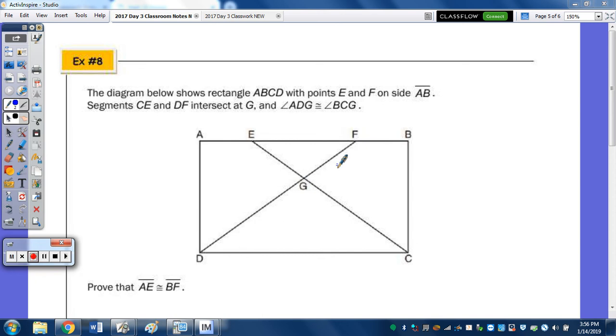Okay, so in class we left off with the two column proofs. So question number eight, it says, the diagram below shows rectangle ABCD with points E and F on side AB, segments CE and DF intersect at G, and angle ADG is congruent to angle BCG. Prove that segment AE is congruent to BF.